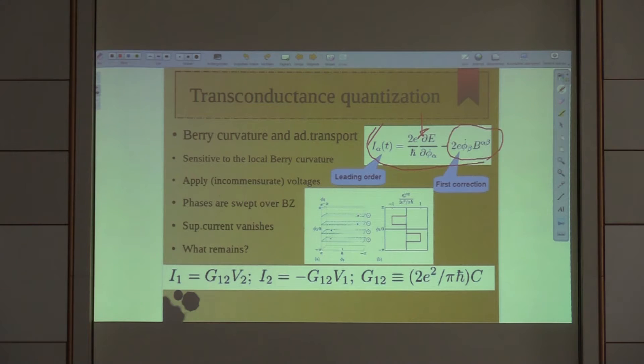In fact what one can see is a quantized transconductance, very similar to the Hall effect—an antisymmetric conductance tensor with quantized value.